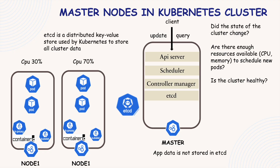One important thing is that etcd does not store your actual application data. So if you are running a database inside a cluster, the actual records or tables are stored somewhere else, usually in a persistent volume. etcd only stores Kubernetes-specific information, like pod definitions, node states, service discovery details, and configuration changes. It's like a database for the cluster itself, not for your applications.